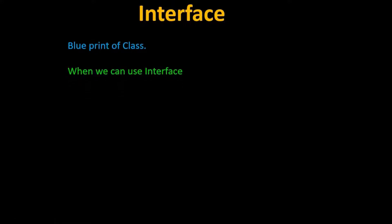When can we use an interface? When we know in advance which methods a class or classes should contain, at that time we can make an interface and declare methods in it, thus providing guidance to classes that those specific methods should be present.